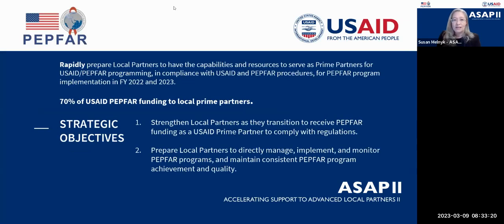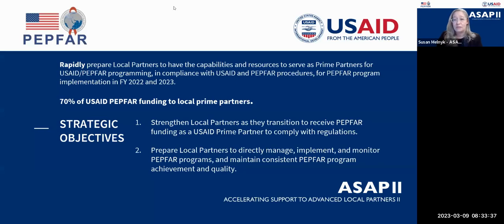Our project rapidly prepares local partners to become primes for USAID. We've been working on ASAP1 for about three years and ASAP2 for about six months to a year. We have two strategic objectives — the first is strengthening local partners so they can transition to receive PEPFAR funding as a prime partner.